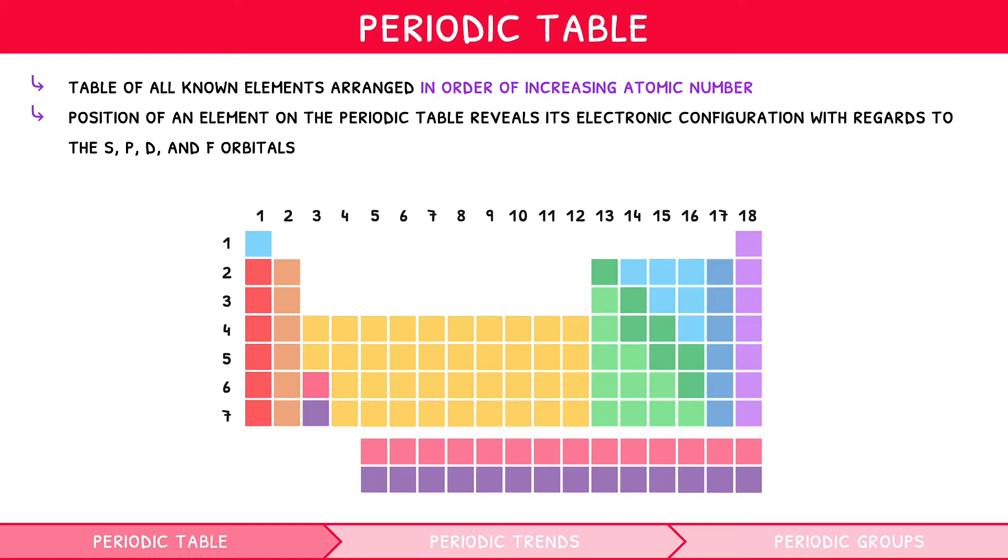There are two additional rules that you will hopefully remember from before IB, which are the group number shows the number of electrons in the valence shell of an element, the period number shows the number of energy levels present within an element.